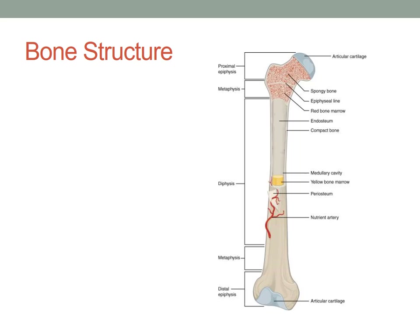You have an epiphysis, which are the ends of the bone. They are made of spongy bone. You can see here at the top you have the proximal epiphysis, and at the bottom you have the distal epiphysis.